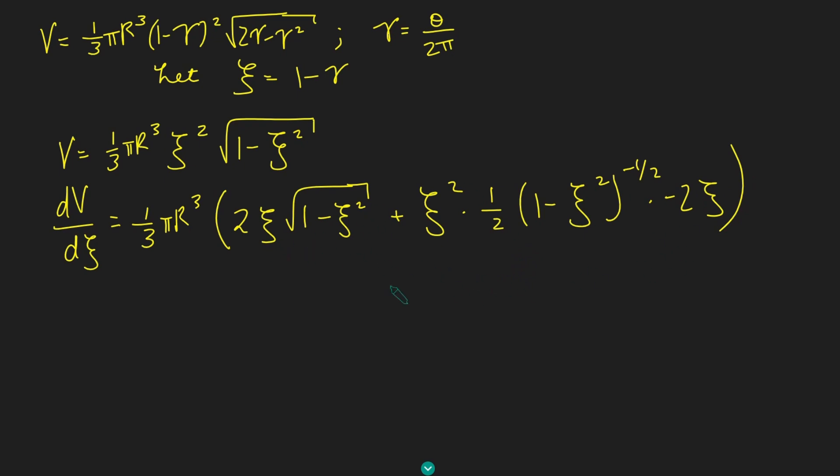Now all we have to do is simplify this. The half and the 2, that cancels. And I've got a negative sign here, which means this whole term here is negative. What else do I have? I have psi's in both of these terms. I'm going to take out this square root 1 minus psi squared on the denominator. So I get a third pi r cubed times psi times 1 over root 1 minus psi squared. What am I left with? Here I've just got 2 times 1 minus psi squared. And here I've just got minus psi squared.